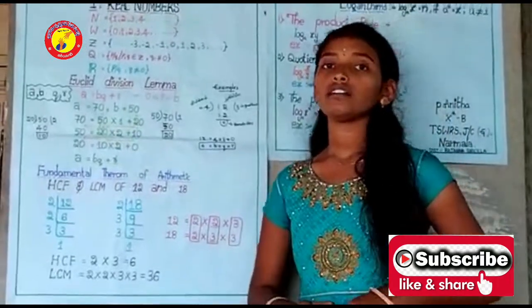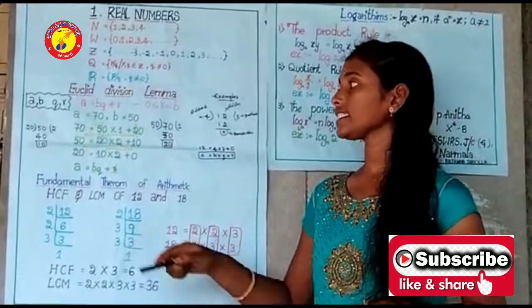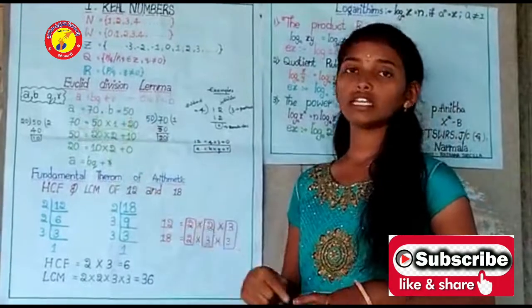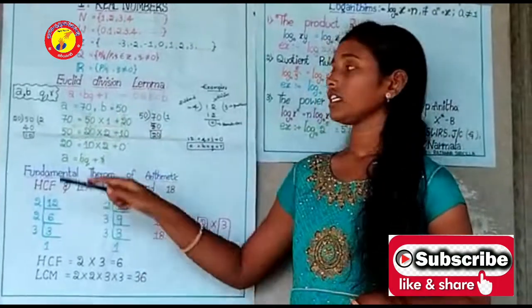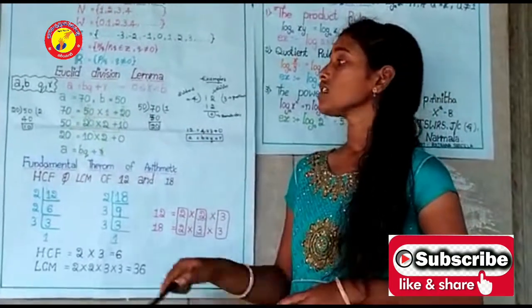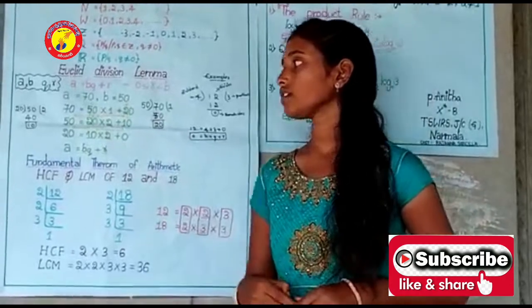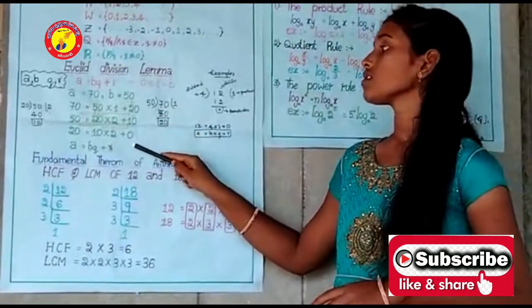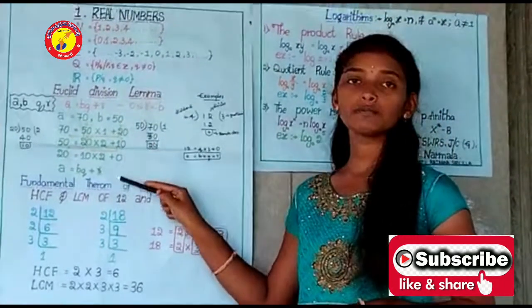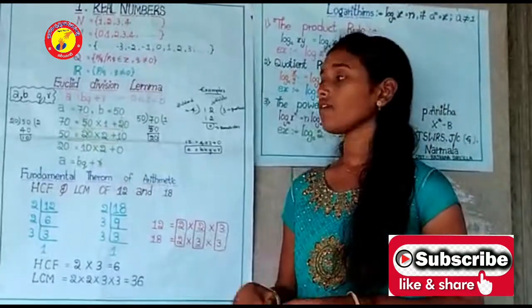To understand Euclidean division lemma better, let's solve an example. Find the HCF of 70 and 50. Here, a = 70 and b = 50. We use the formula: dividend = divisor × quotient + remainder. In this process, the divisor becomes the dividend and the remainder becomes the divisor. Continue this process until the remainder is zero. When the remainder is zero, the value of b is the HCF. Here, HCF is 10.